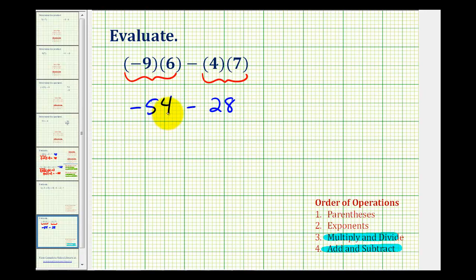At this point, if you're comfortable leaving this as subtraction, you can. But we can also rewrite this as an addition problem. Subtracting a positive 28 is the same as adding a negative 28. So we could write this as negative 54 plus negative 28.